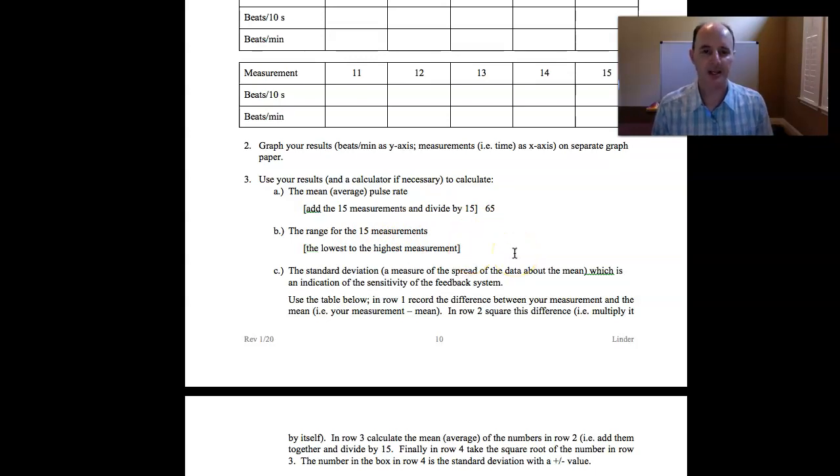The range is your high to low. So let's say, for example, maybe one of my measurements was 58. Let's say it went that low. And then let's say I went up to 80. That would be my highest number. So that would be my range. So whatever your lowest number and your highest number is, that represents the range, again, in beats per minute that you would put down for part B.